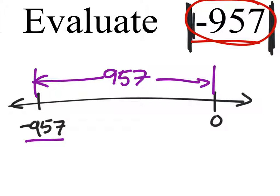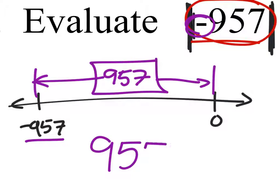So it's not that we're changing the sign on negative 957. It has more to do with how far away the value is from zero, and that's where this number line stuff comes in. But the answer is just a positive 957 units away from zero.